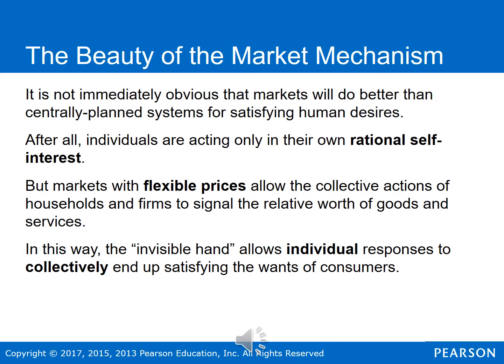It's not immediately obvious that markets are going to do better than centrally planned systems for satisfying human desires. Critics of markets have said: look at all these entrepreneurs doing things differently — how efficient can it be to let an entrepreneur go out and do something and fail? That's a lot of time, money, and stress. We know the best way to do it — why not just tell firms what to produce and how to produce it? However, there are serious problems with that approach.